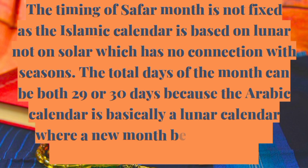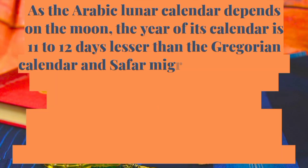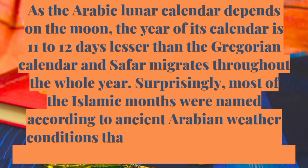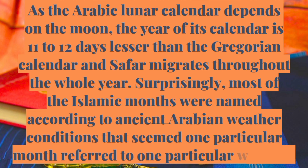The timing of Safar month is not fixed as the Islamic calendar is based on lunar, not solar, which has no connection with seasons. The total days of the month can be either 29 or 30 days because the Arabic calendar is basically a lunar calendar where a new month begins with the sighting of a new moon's crescent. As the Arabic lunar calendar depends on the moon, the year is 11 to 12 days lesser than the Gregorian calendar, and Safar migrates throughout the whole year.